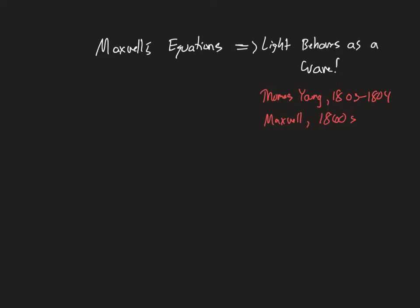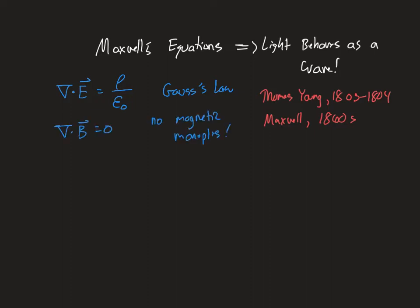So first I'm going to write down Maxwell's equations. The first one says the divergence of the E field is basically the density of the charge — that's Gauss's law. The next one is the famous no magnetic monopoles: the divergence of the B field is zero. That doesn't have its own special name but it does imply that there are no individual source charges for the magnetic field.